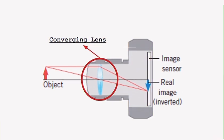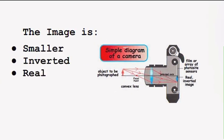This lens refracts light and focuses the image on the back of the camera, producing a smaller, inverted, real image.